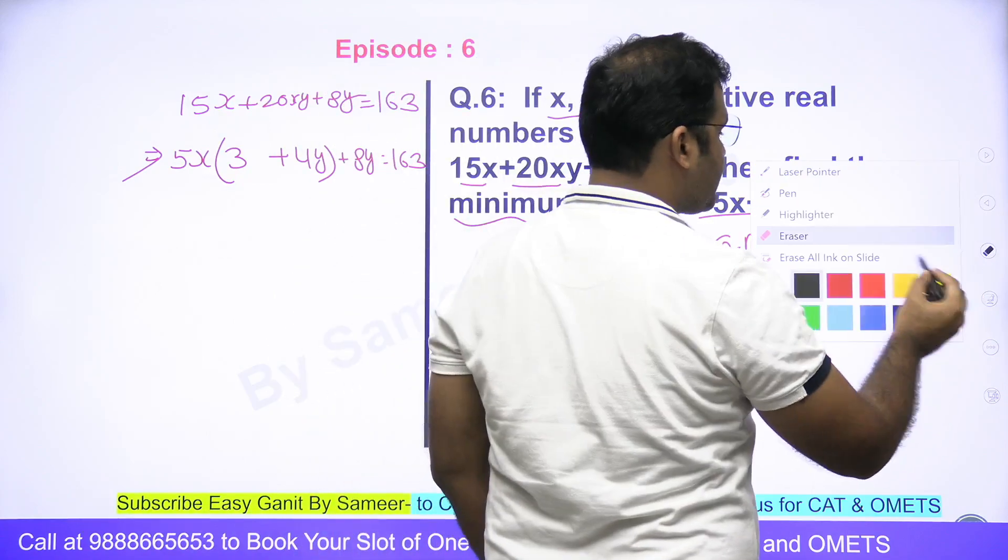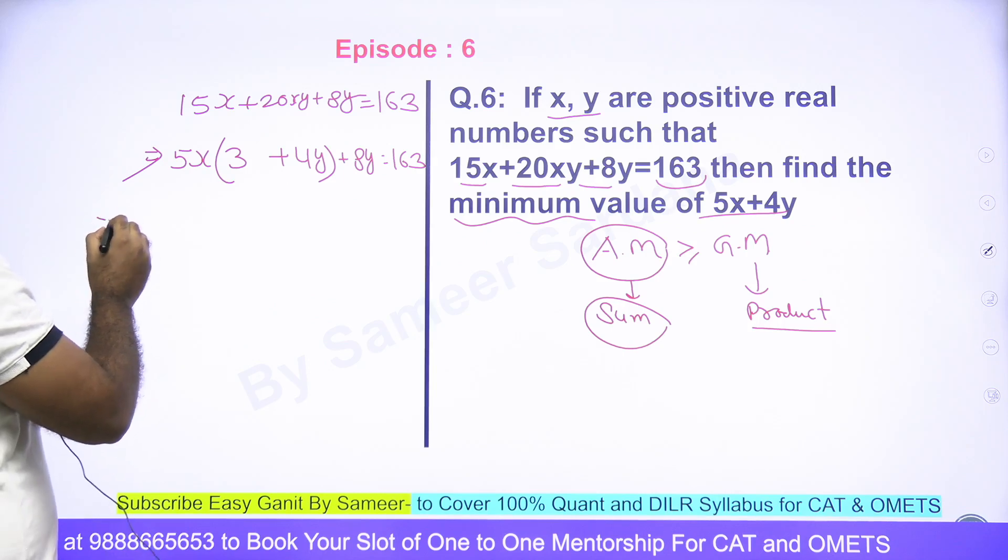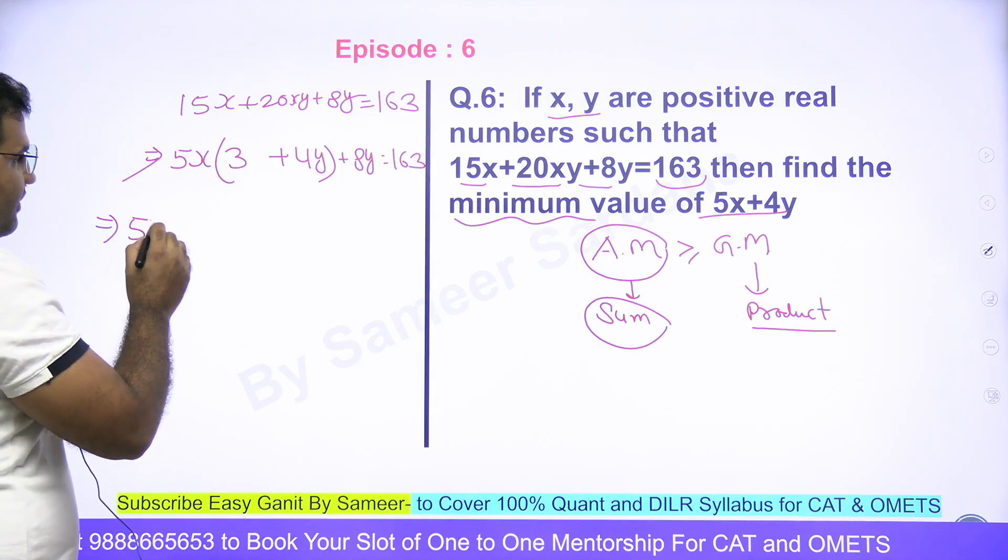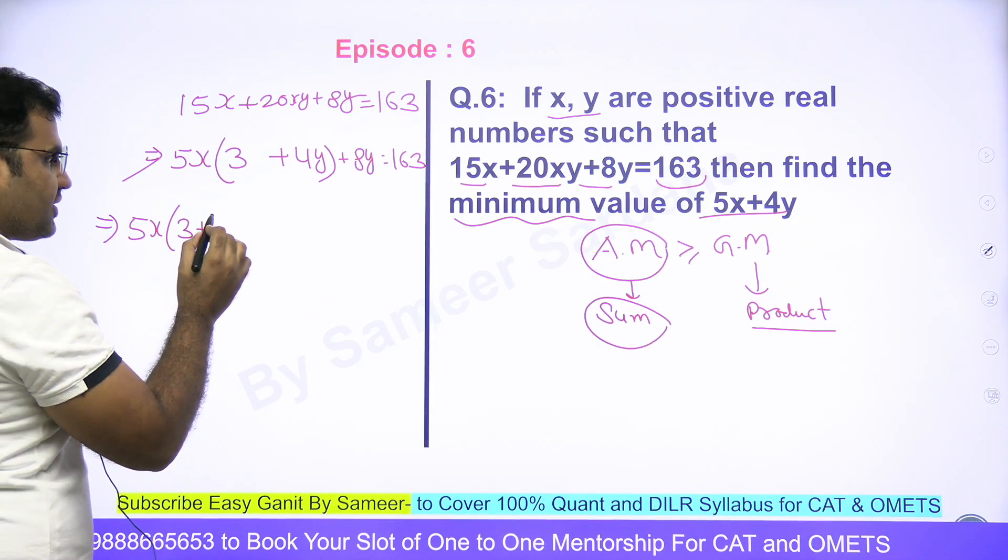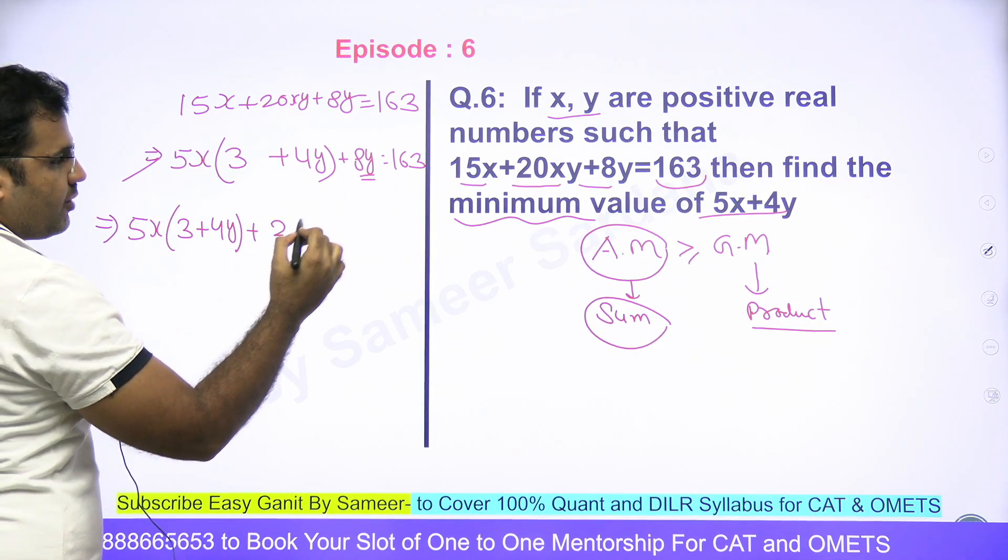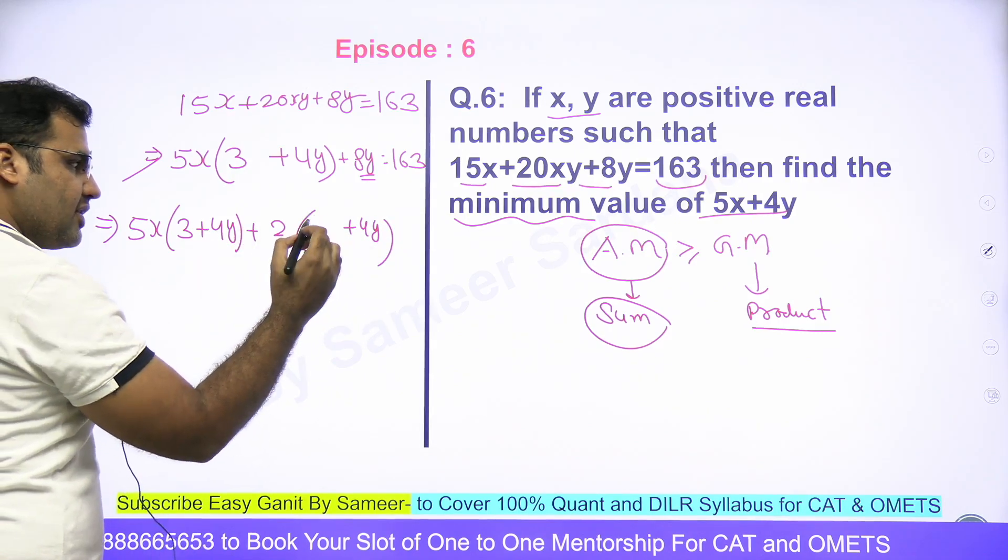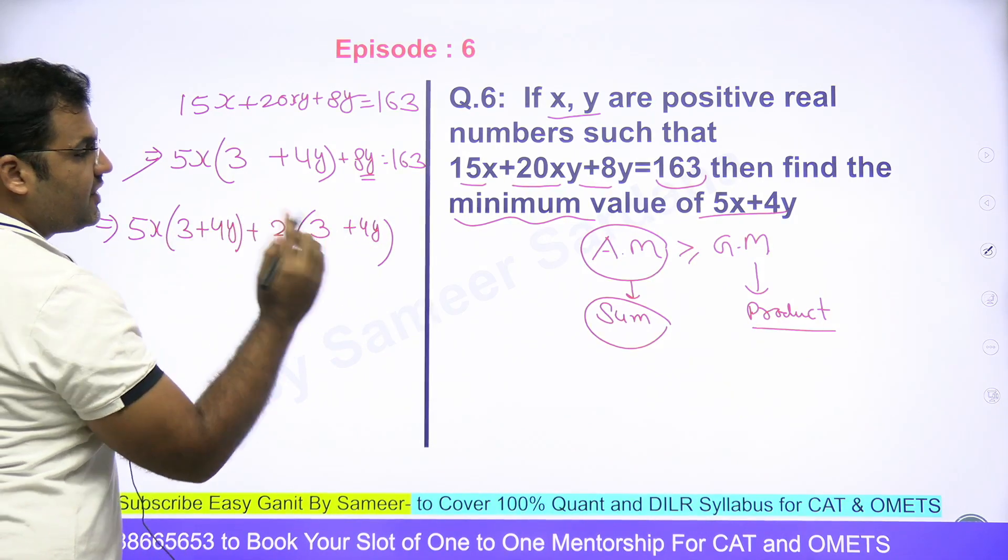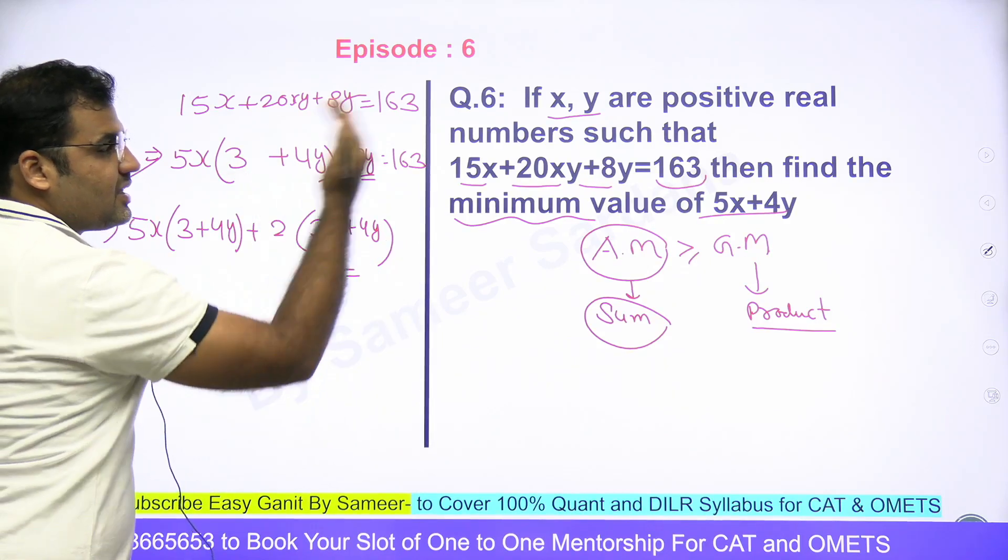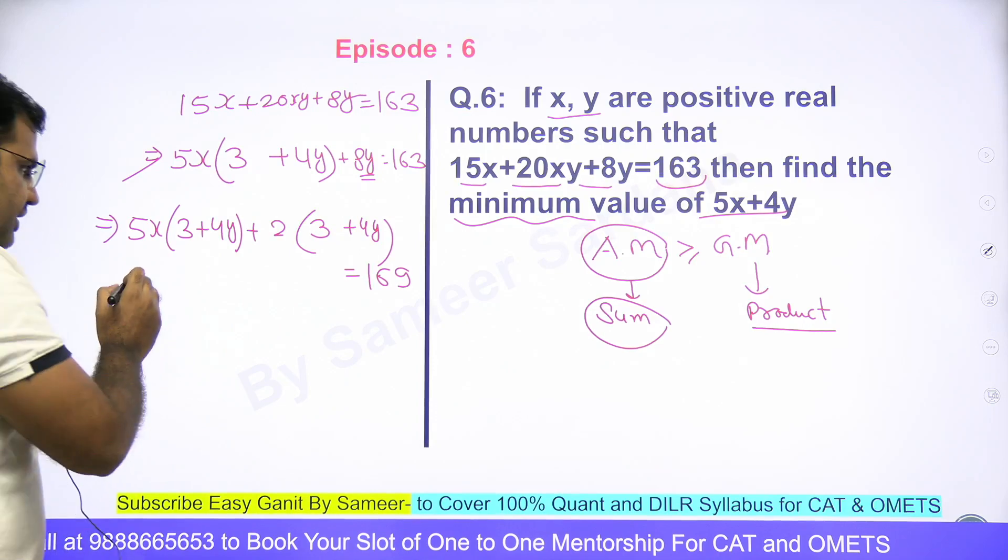I need another expression with 3+4y inside the bracket, so that pura ka pura value common aasake. So 5x(3+4y) plus, isko 8y banana ke liye karna padega? 2 common lena padega, plus 2(3+4y). Yahan pe 3 aur lena padega, 2×3=6. Aapne left hand side me 6 add kiya, toh right hand side me bhi aapko 6 add karna padega, so this will become 169.